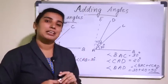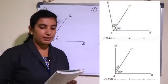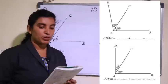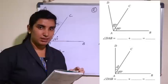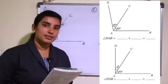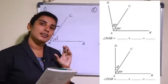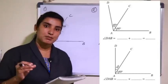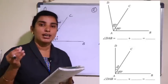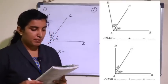Now let's take questions from the textbook. Let's take the first question: In the figures below, the measures of two angles are shown. Write the third angle as a sum or difference and compute its measure.